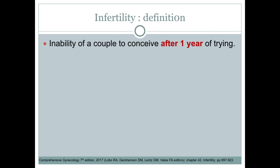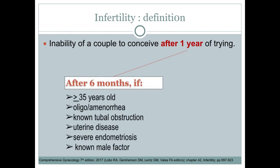However, this one year is shortened to 6 months if the female partner is at least 35 years old and above, has oligo or amenorrhea, has a known tubal obstruction, has a known uterine disease, is diagnosed with severe endometriosis, or if the male partner has a known male factor infertility.